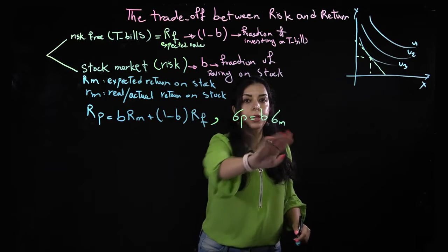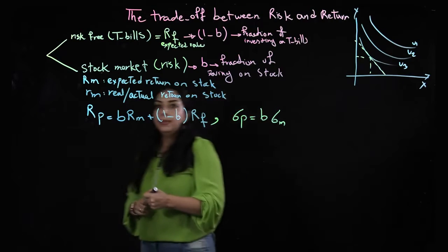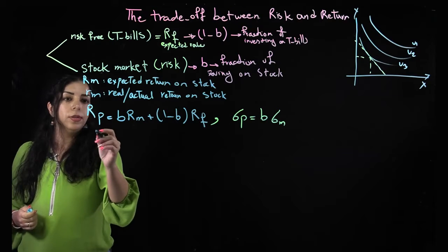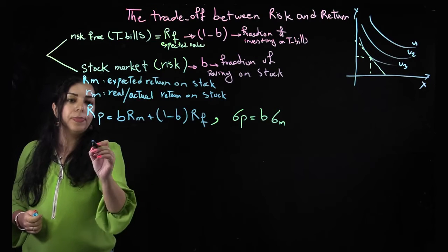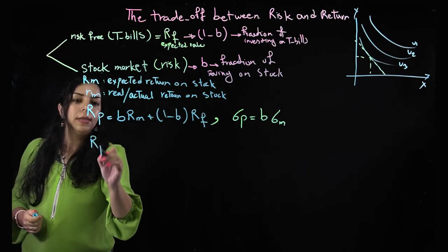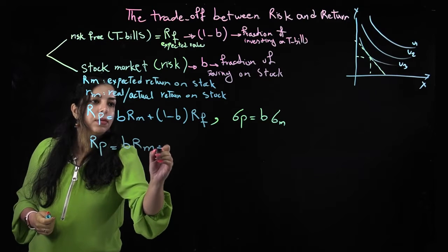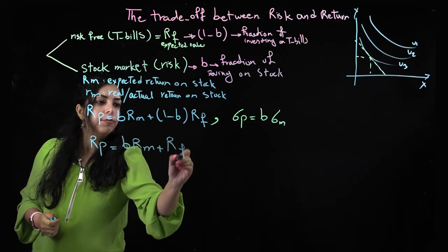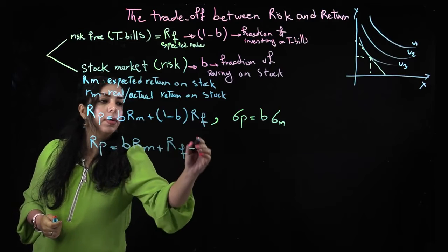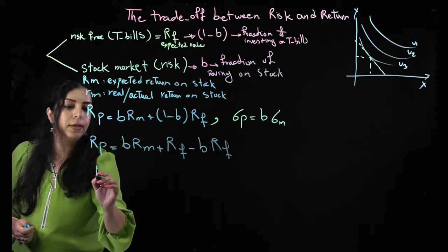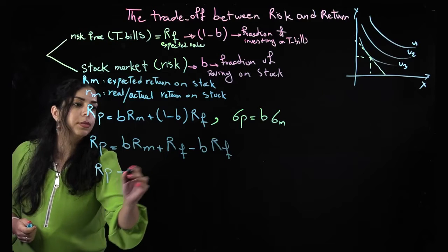Now that we calculated this part, then I want to open up this. So let's see that plus rf, I'm just opening this part, minus b rf, and then rb is equal to,